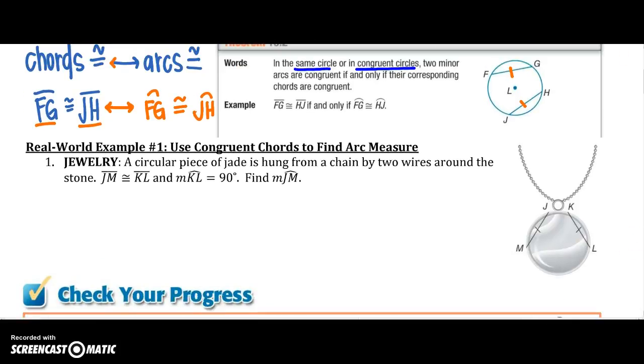So in jewelry, a centerpiece of jade is hung from a chain by two wires around the stone. If JM is congruent to KL, and I also know that arc KL, remember the arc is the exterior part, is 90 degrees. We want to find what is JM.